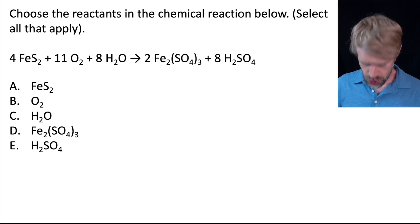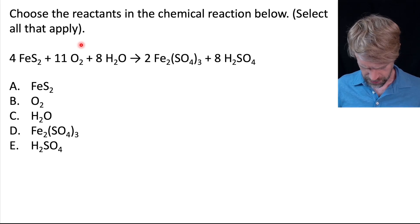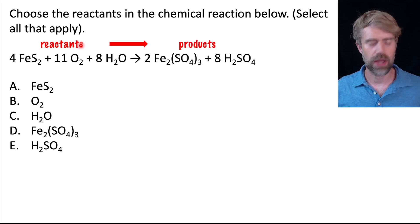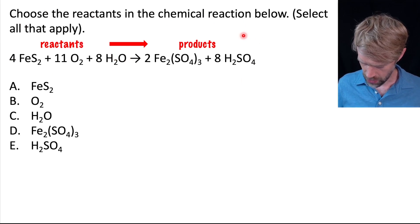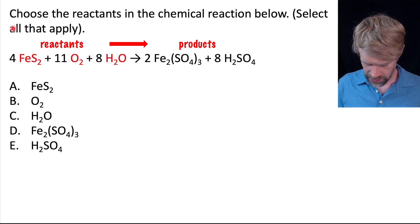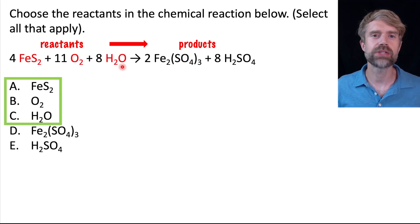Choose the reactants in the chemical reaction below. Select all that apply. Well, this is pretty basic, and you'd be lucky to get it on the TEAS, but it's a good way to review the concepts. You need to remember that in a chemical reaction, reactants form products. So everything on the left side of the arrow over here is a reactant. And that gives us FeS2, O2, and H2O, A, B, and C.